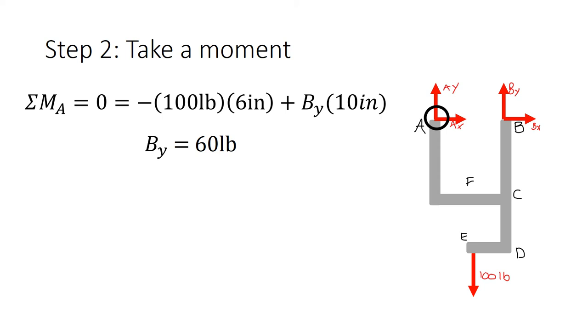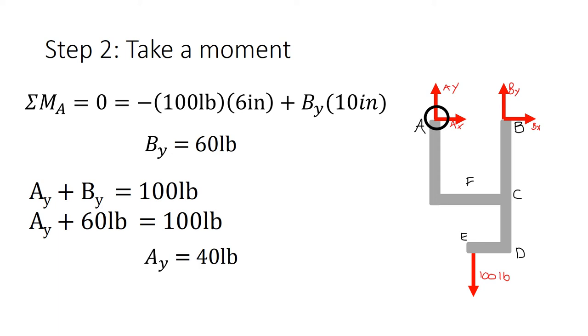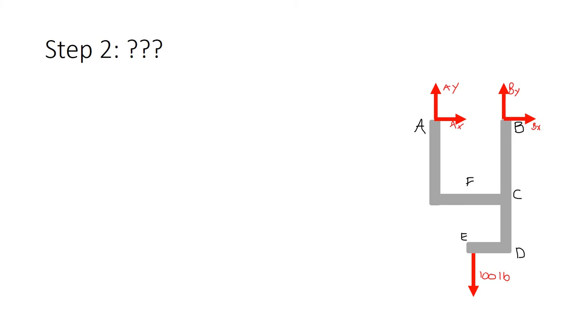Going back to one of the equations we found, we have Ay plus By equals 100 pounds, and Ay plus 60 pounds equals 100 pounds, so Ay equals 40 pounds. Now that we've taken a moment about A, let's go back to the original structure. There's nothing else we can do with the entire structure, so let's go to step three.